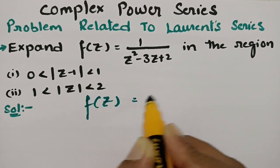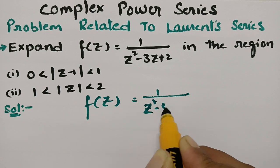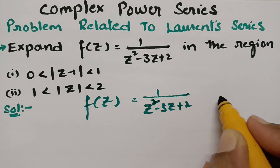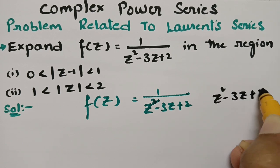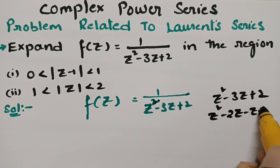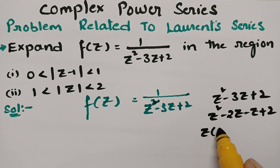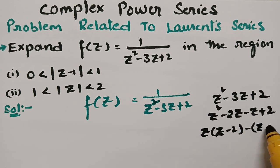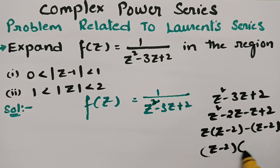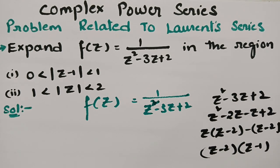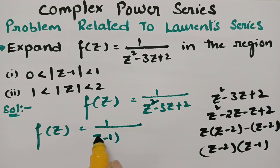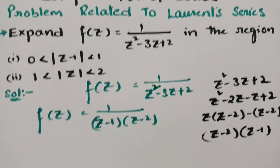f(z) is given as 1/(z² - 3z + 2). We need to factor the denominator. z² - 3z + 2 can be written as z² - 2z - z + 2. Taking z common from the first two terms gives z(z - 2), and taking minus common from the last two gives -(z - 2). Taking (z - 2) common, what remains is (z - 1). Therefore we can write f(z) = 1/[(z - 1)(z - 2)].